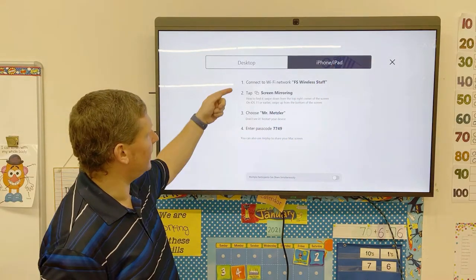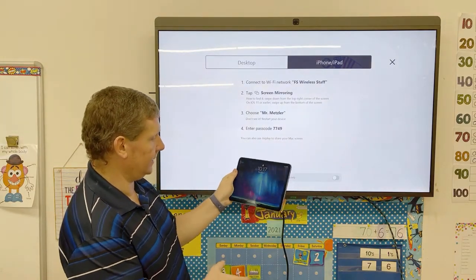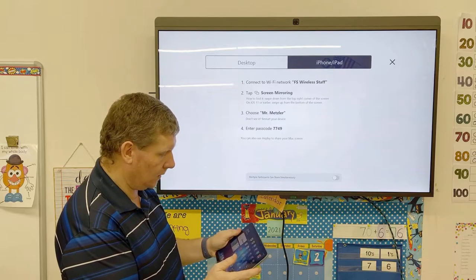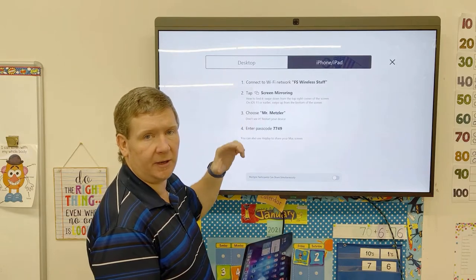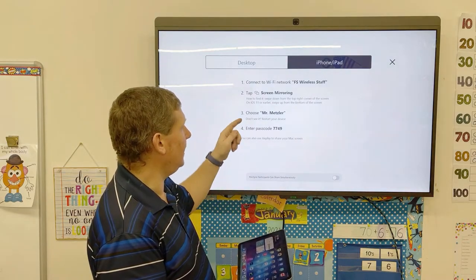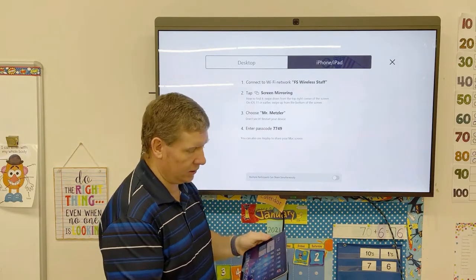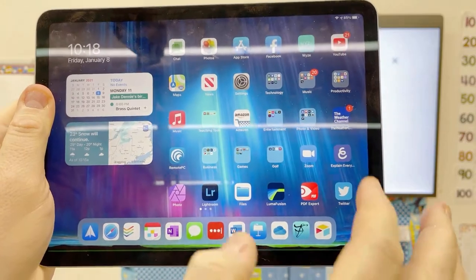So you tap on that, and it's going to give you all the steps that you need to do. I've got my iPad here. I'm going to go ahead and log in. Now what I'm going to do is follow these steps. You have to go to Screen Mirroring on your tablet or your phone, and it'll tell you what to look for, and then it will give you the passcode.